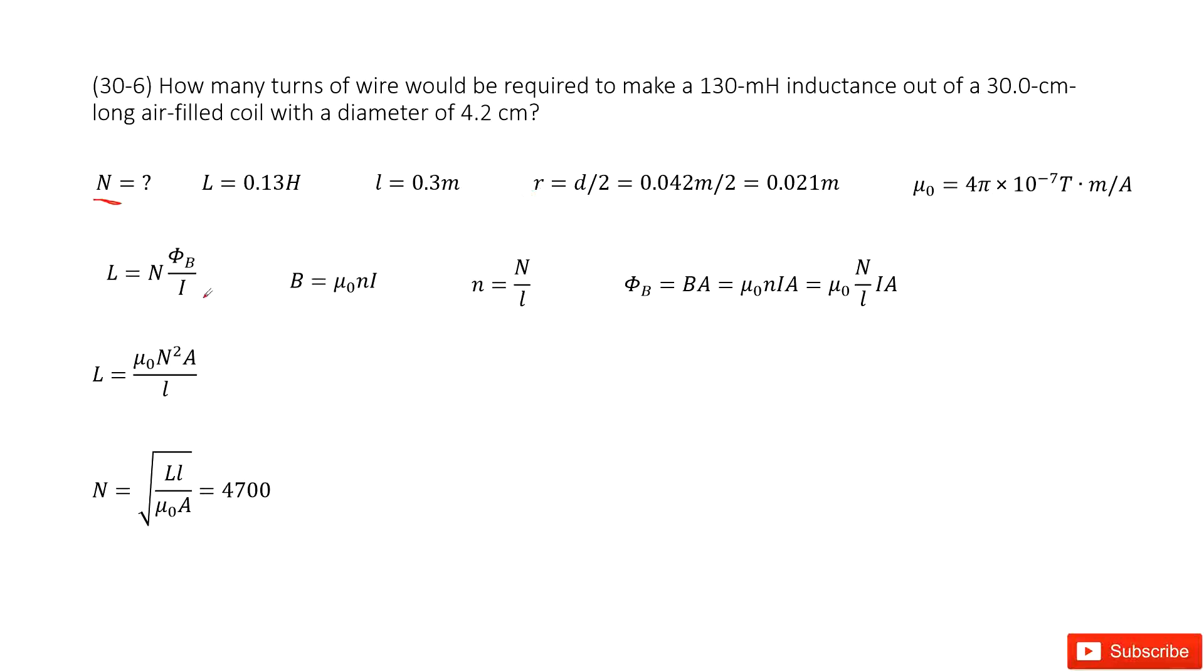Straightforward, we can consider this equation about self-inductance. In this one, you can see L is given, n is unknown. So the magnetic flux phi B, we don't know.